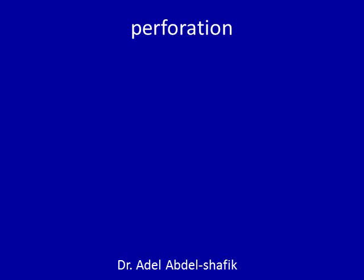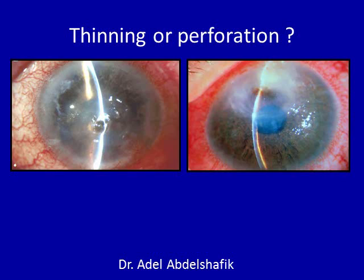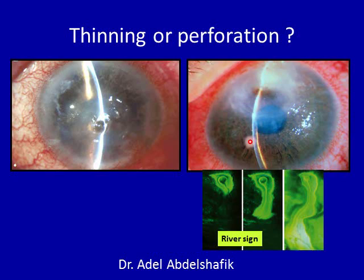Complications after perforation: a very thin cornea with the anterior chamber still formed indicates no perforation, but if the iris is visible against the back of the cornea with no anterior chamber, perforation has occurred. Once there is perforation, aqueous comes out, the anterior chamber is lost, and the iris moves to the back of the cornea. Fluorescein applied here produces a clear track in the tear film — this is known as the Seidel sign.